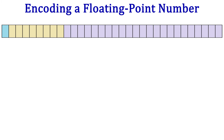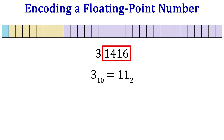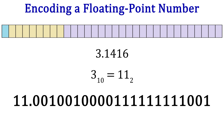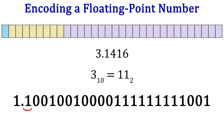We started this video talking about pi, so let's code pi and round it to 3.1416. First, we need to convert this to binary. 3 is 11 in binary. We can use repeated multiplication to find the binary form of the fractional part 0.1416, however the best we can do is an approximation. We'll use all 23 bits in the significand. 3.1416 in binary is approximately 11.00100100001111110111. We move the decimal over one place, giving us a 23-bit significand.